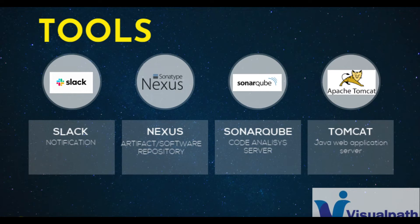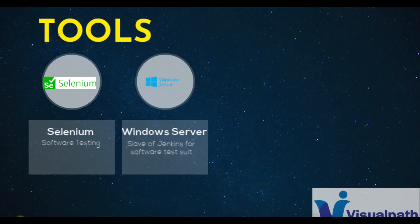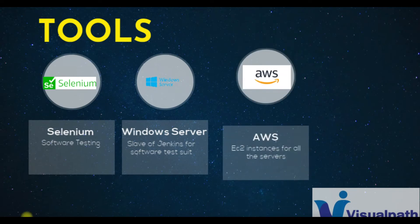We're going to provision all of this on EC2 instances. Selenium will be used for software testing — we'll conduct software testing on a Windows server, which we'll create and add as a slave to Jenkins. Software testing will be performed using Selenium on that Windows server, and this will happen automatically every time there is a deployment. All of this will be set up on AWS cloud using EC2 instances for Jenkins, Nexus, SonarQube, Tomcat, MySQL, and the Windows server.